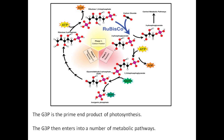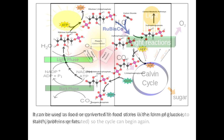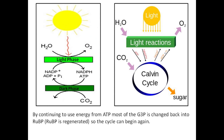The G3P then enters into a number of metabolic pathways. It can be used as food or converted to food stores in the form of glucose, starch, proteins, or fats. By continuing to use energy from ATP, most of the G3P is changed back into RuBP so the cycle can begin again.